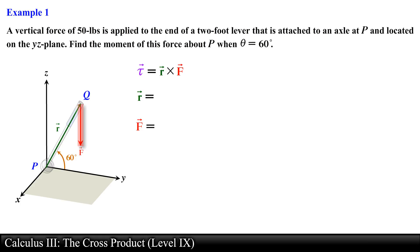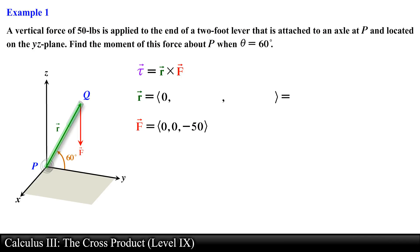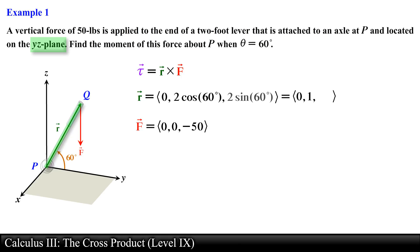Since the force is directed vertically downward, the force vector will only have a Z component of negative 50 pounds; the other components will be equal to 0. For the position vector, we can find the Y and Z components by using right triangle trigonometry. The position vector is located in the YZ plane, so it will have a Y component equal to 2 times cosine of 60 degrees, which equals 1, and a Z component equal to 2 times sine of 60 degrees, which equals the square root of 3.